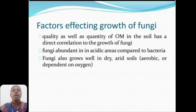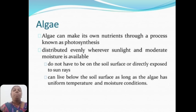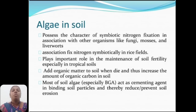Fungi also grow in dry, arid conditions. Algae can make their own nutrition through a process known as photosynthesis, distributed evenly wherever sunlight and moderate moisture is available. They do not have to be on the soil surface or directly exposed to sun rays, and can live below the soil surface. Algae in soil possess the character of symbiotic nitrogen fixation in association with organisms like fungi, mosses, and liverworts, and fix nitrogen symbiotically in rice fields. Most soil algae act as a cementing agent in binding soil particles, thereby reducing or preventing soil erosion.